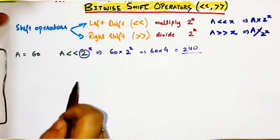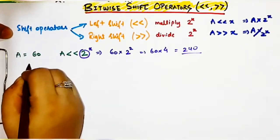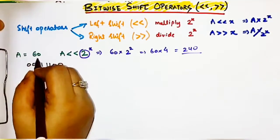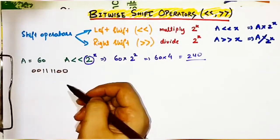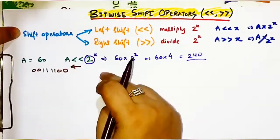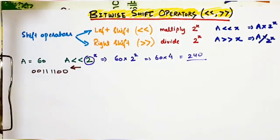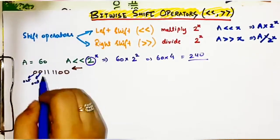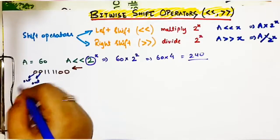Let's understand how the shifting of bits takes place in binary and how the result comes out to 240. The binary number for 60 is 00111100 — this is an 8-bit binary number. Now you have to left shift this by two digits. Left shift means shifting all the digits towards the left side, so the two leftmost zeros will be popped out.